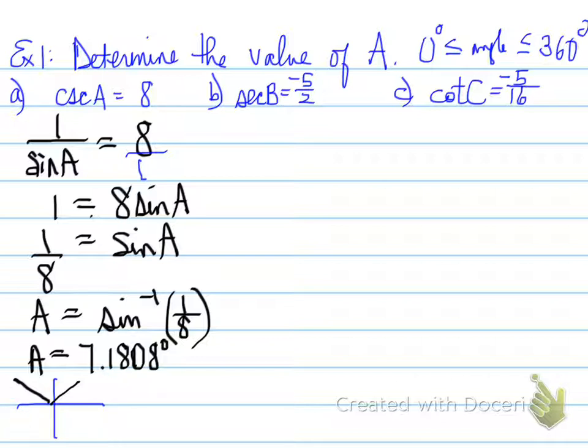Now, is that the only possible value? 7.1808 degrees is in the first quadrant. Sine is positive. Because the angle can be anywhere from 0 to 360 degrees, the other value of A has to be in the second quadrant, because that is where sine is positive. Remember the cast rule. Sine is positive in the first and second quadrants. The other angle is going to be 180 minus 7.1808, so you get the value 172.8192 degrees.